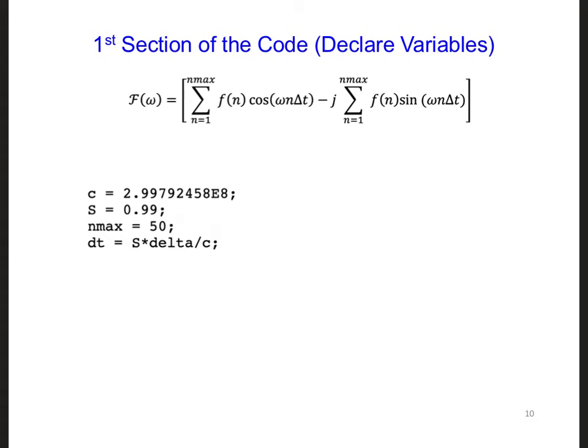For example, the lines declaring the values of c, s, and nmax can be copied over, as well as our calculation of dt.